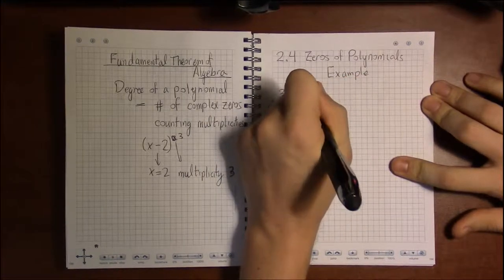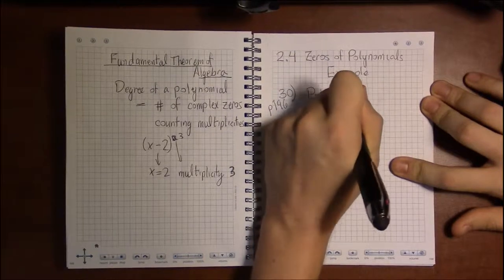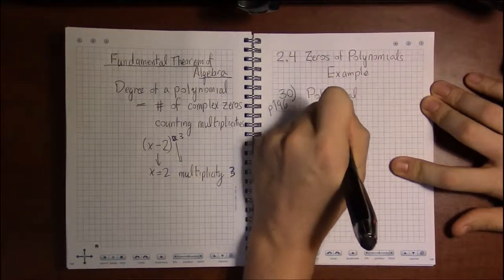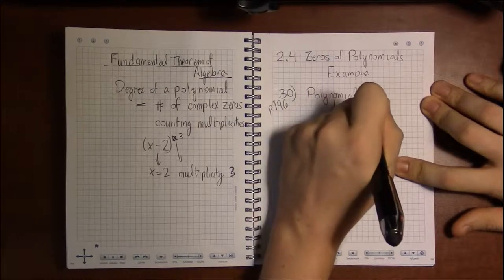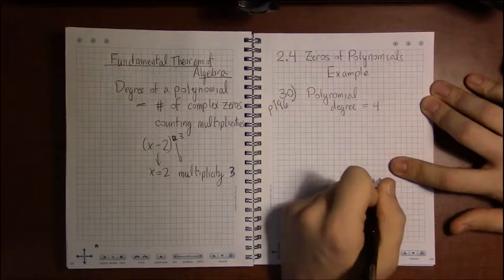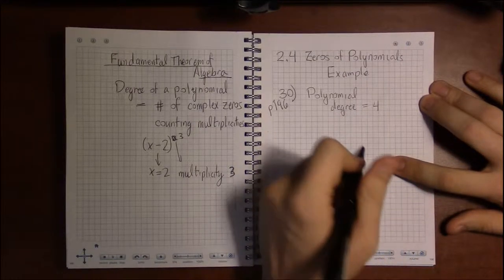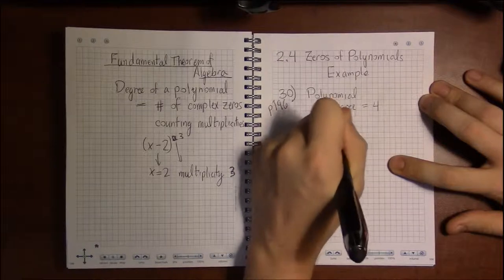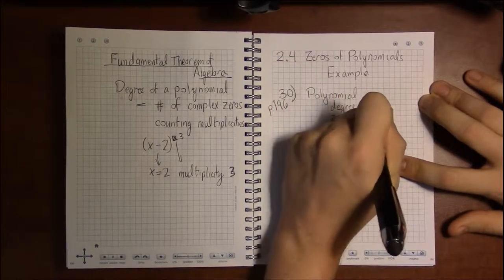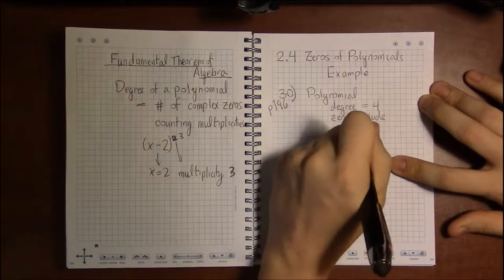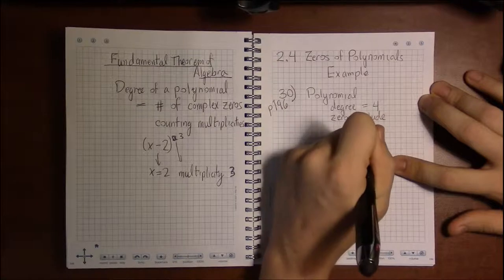We're asked to come up with a polynomial which satisfies the following requirements: one, its degree must be four, and two, the zeros of this polynomial must include minus i and one minus i.